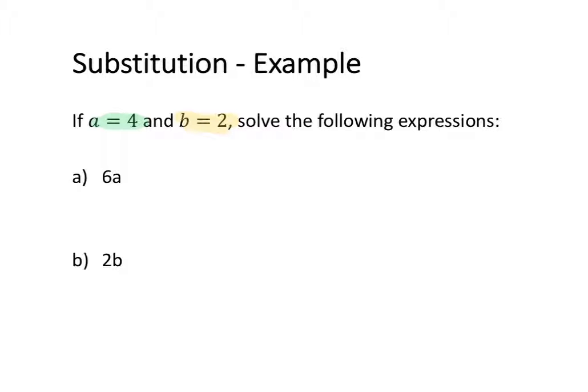So the first one is 6a. The variable in this one is a. And 6a we know is equal to 6 times a because there's always a multiplication sign in between the coefficient and the variable.